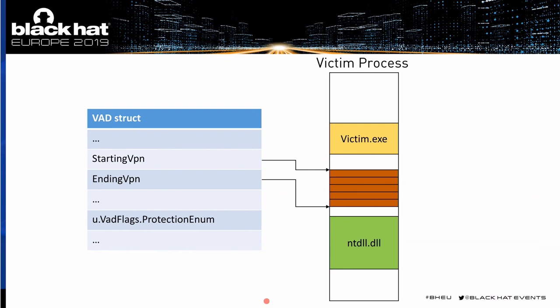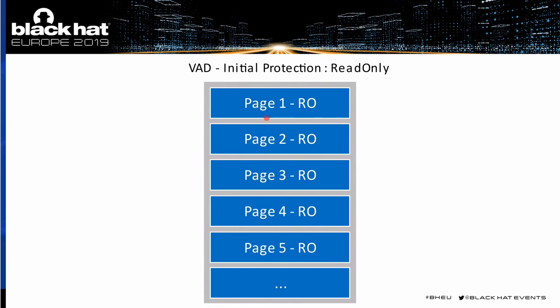Why doesn't the VAD struct reflect those protection changes? The reason is that there is only one VAD struct for a whole memory area, but the memory area consists of many pages, and each page can have a different protection. While the initial situation might have all pages read-only, we can change the permissions of each page individually — first page read-only, second read-write, and so on. This cannot be reflected with a VAD struct because there's only one protection field for the whole memory area, not a protection value for each individual page.